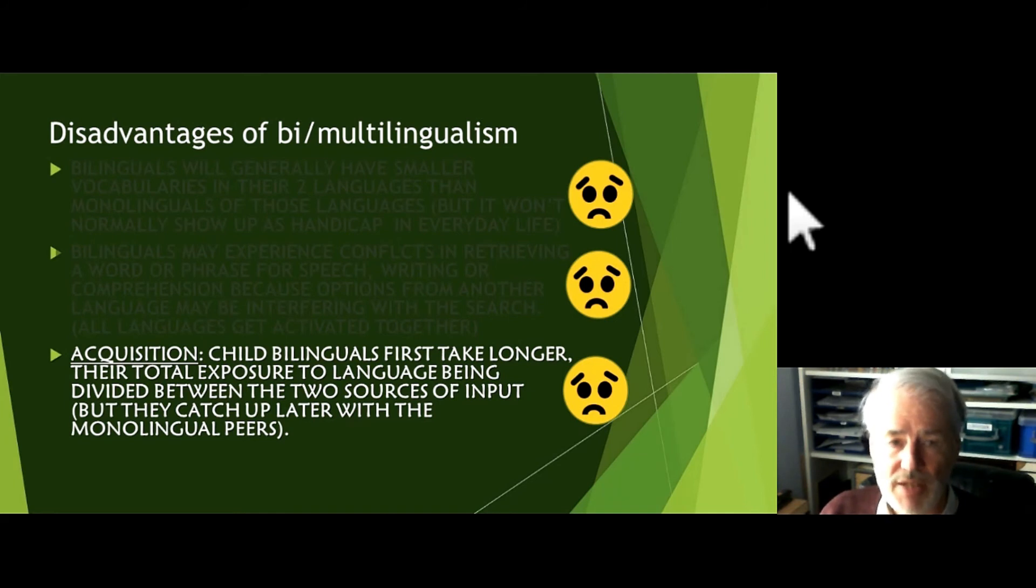And thirdly, as far as acquisition is concerned, when children are learning their two languages, they will take longer. Their total exposure will probably be equal or different, but in any case, the exposure has to be divided between the two sources of input. So it's natural that there will be some delays, and if you're the parent of a child who is being brought up bilingually, you may notice that your child is a little slower than the monolinguals in his or her class, and start to worry that perhaps this is a bad thing, having two languages in the house when there's only one language at school, and it's causing delays for your dear child. But you don't have to worry because they always catch up later, and in the end they do very well.